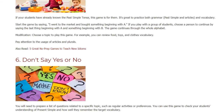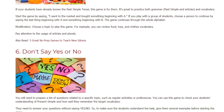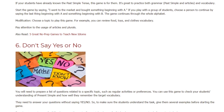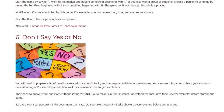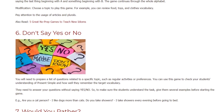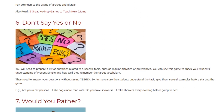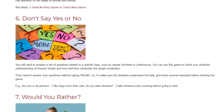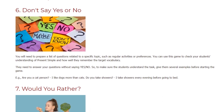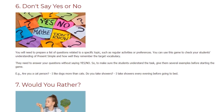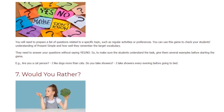Game six: Don't Say Yes or No. You will need to prepare a list of questions related to a specific topic such as regular activities or preferences. You can use this game to check your students' understanding of present simple and how well they remember the target vocabulary. They need to answer your questions without saying yes or no. Give them several examples before starting — for example: 'Are you a cat person?' Answer: 'I like dogs more than cats.' 'Do you take showers?' Answer: 'I take showers every evening before going to bed.'